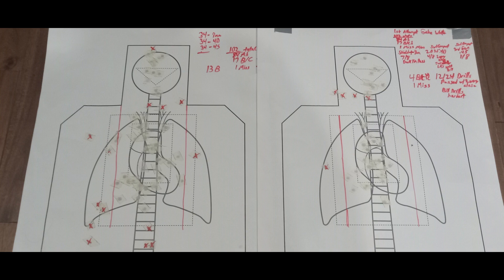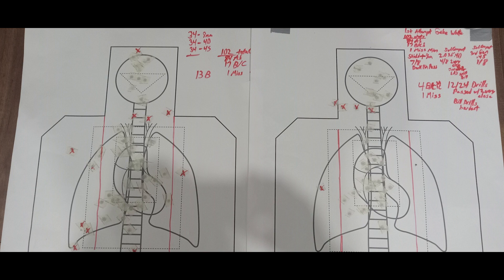Looking at the targets, the body box would be the red line on a USPSA target, about 6.5 by 11 inches. I measured it out, timed every segment, and did a lot better than I thought, especially the first time ever doing these drills.